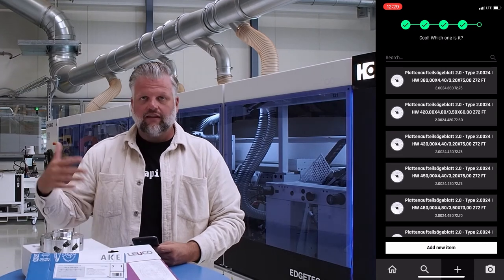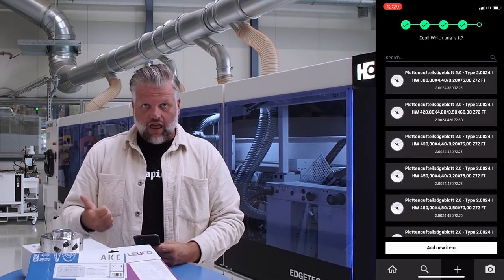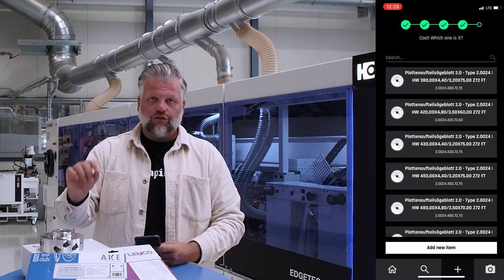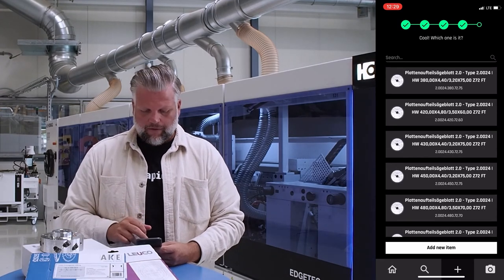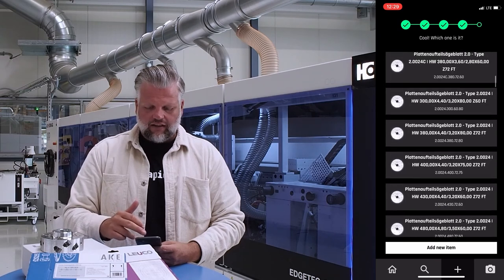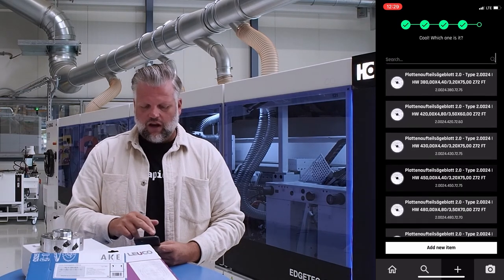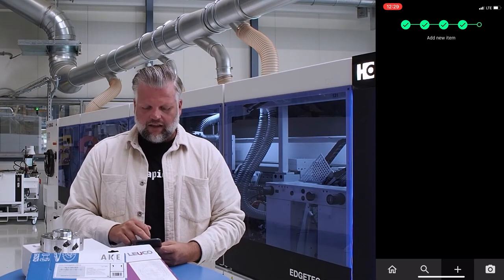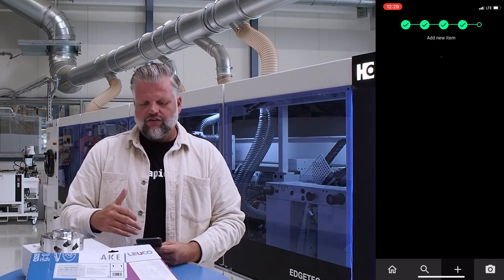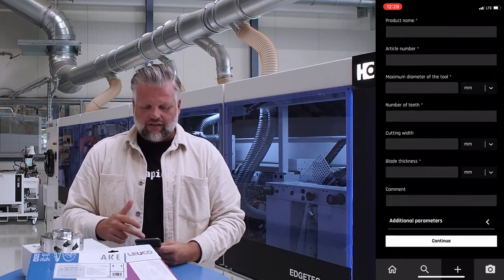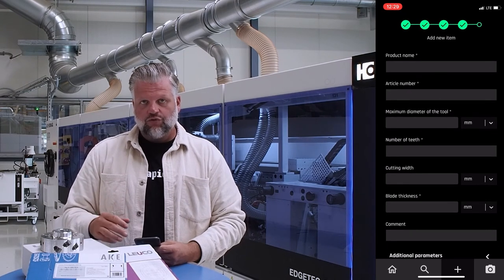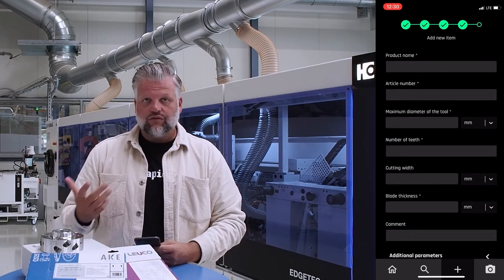Once saved, the saw blade from AKE is digitalized and gets a unique code — print the QR code and attach it to the blade. If you don't find your item in the catalog list, you can also search by article number, or click 'Add new item' and manually fill in seven fields to create the tool from scratch within seconds.